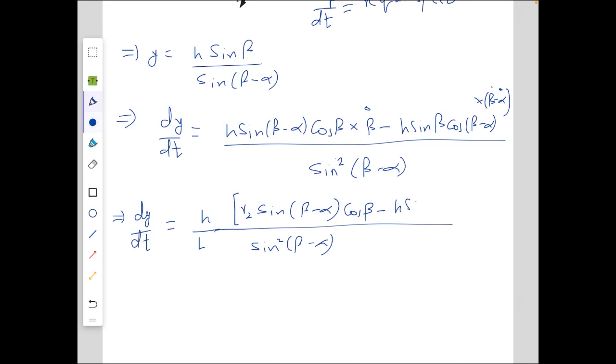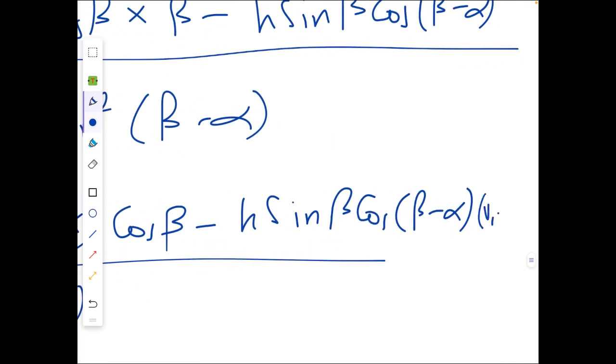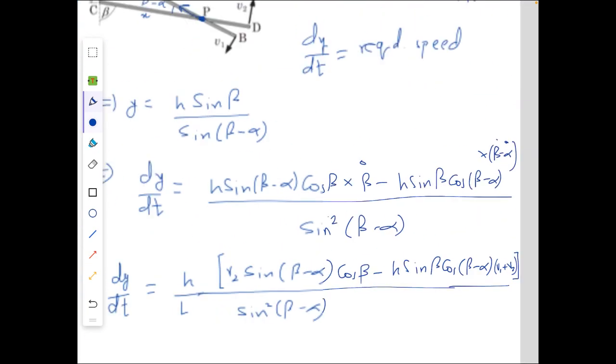Minus h sine beta cos (beta minus alpha) multiplied by (v1 plus v2). So yeah, this is the final answer.